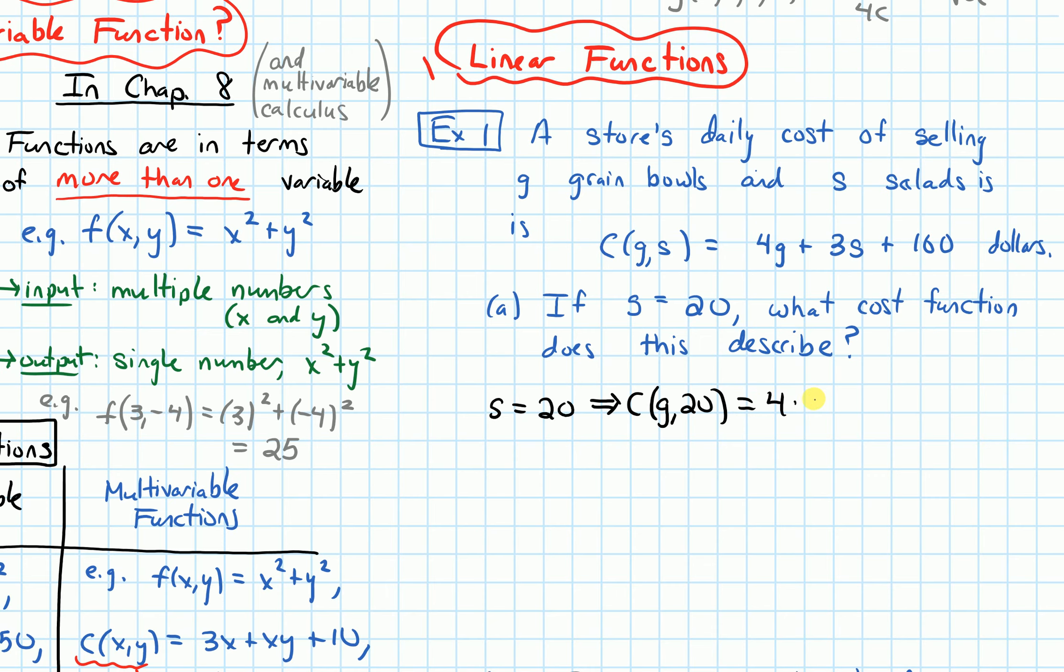we'll get 4G plus 3 times S. And we're plugging 20 in for the S plus 160. And if I simplify, we get C of G comma 20 equals 4G plus 60 plus 160, which is 220.